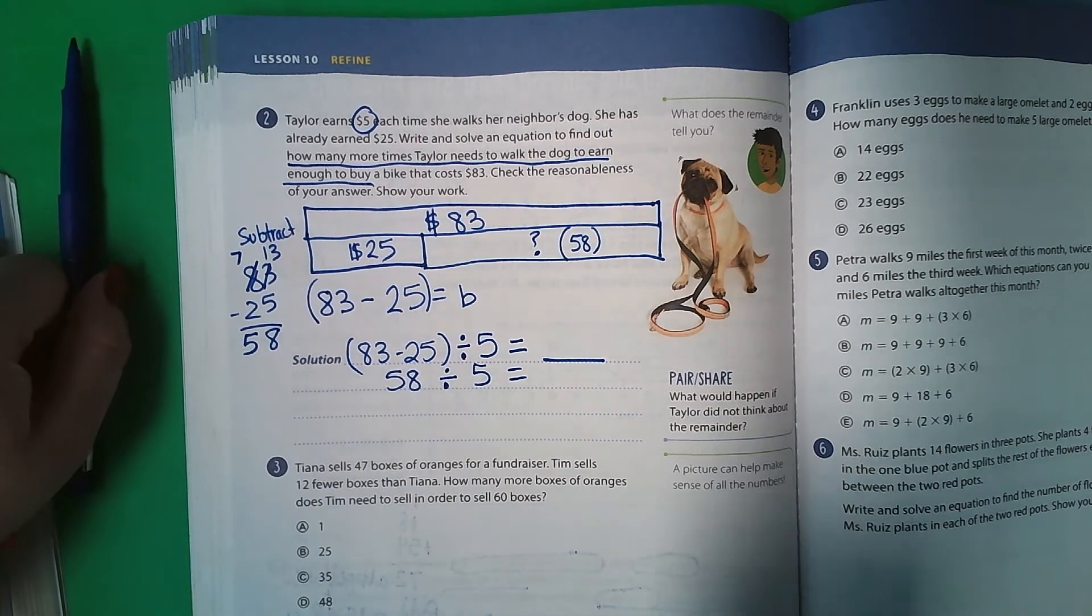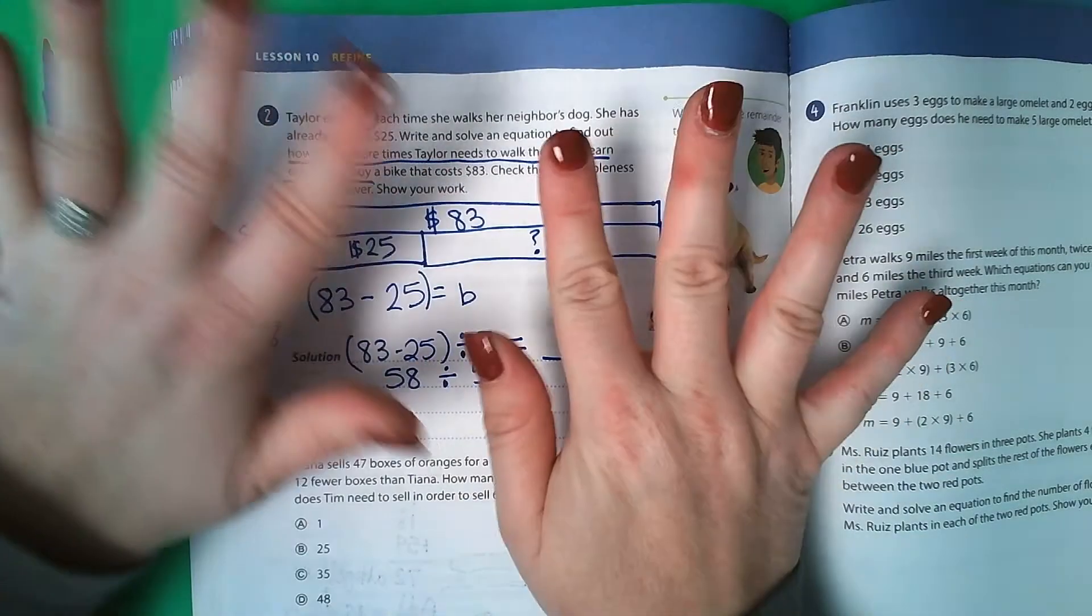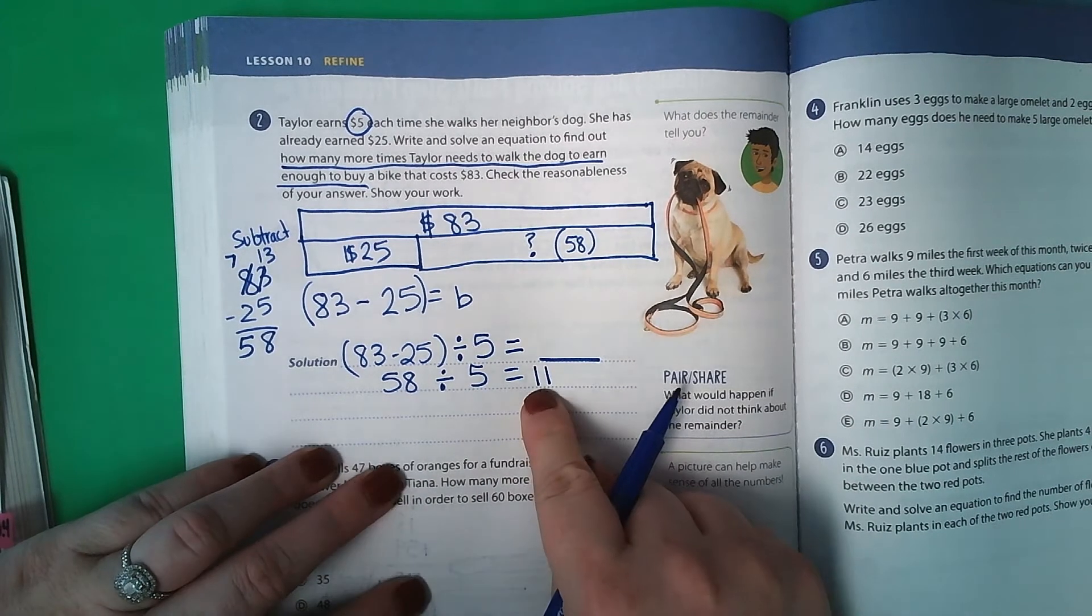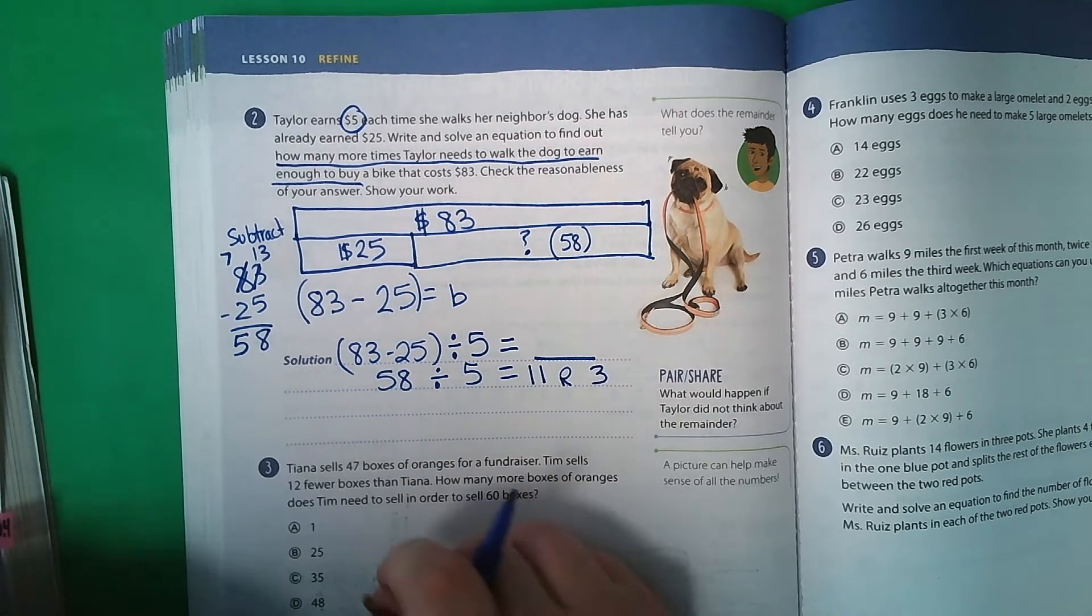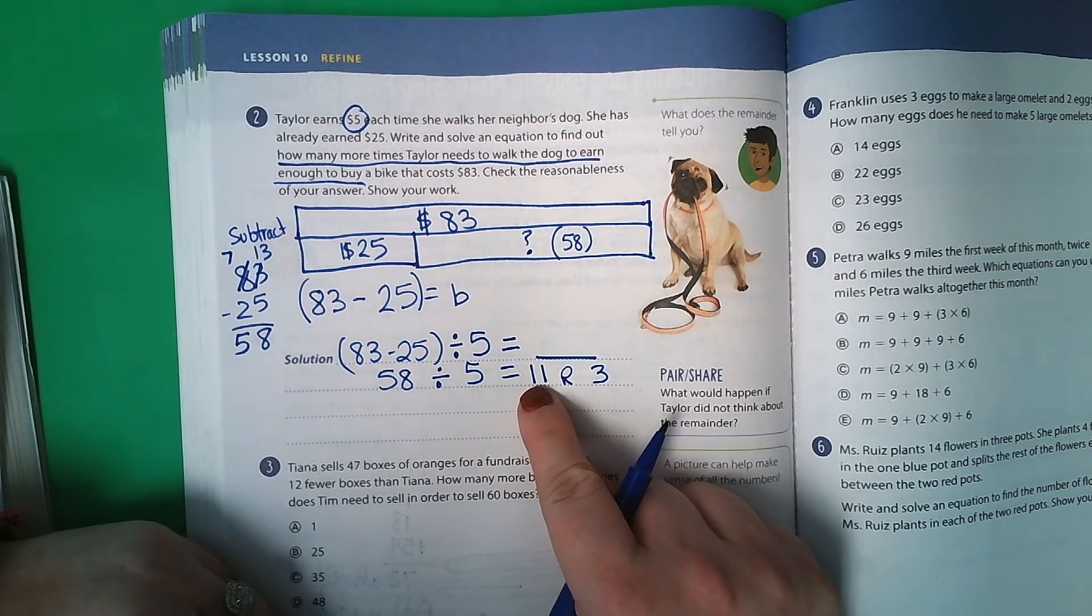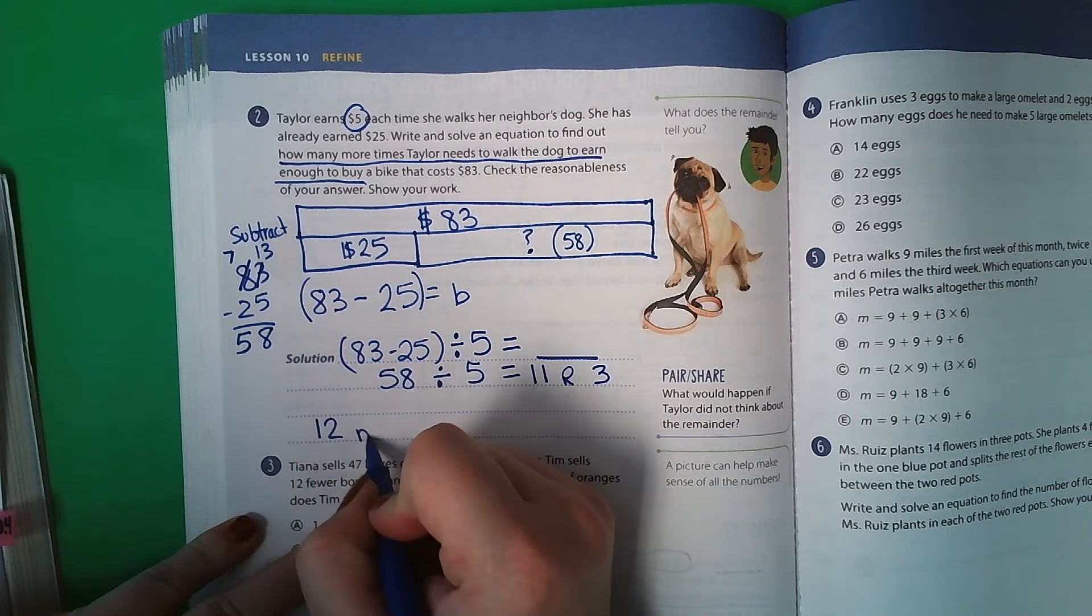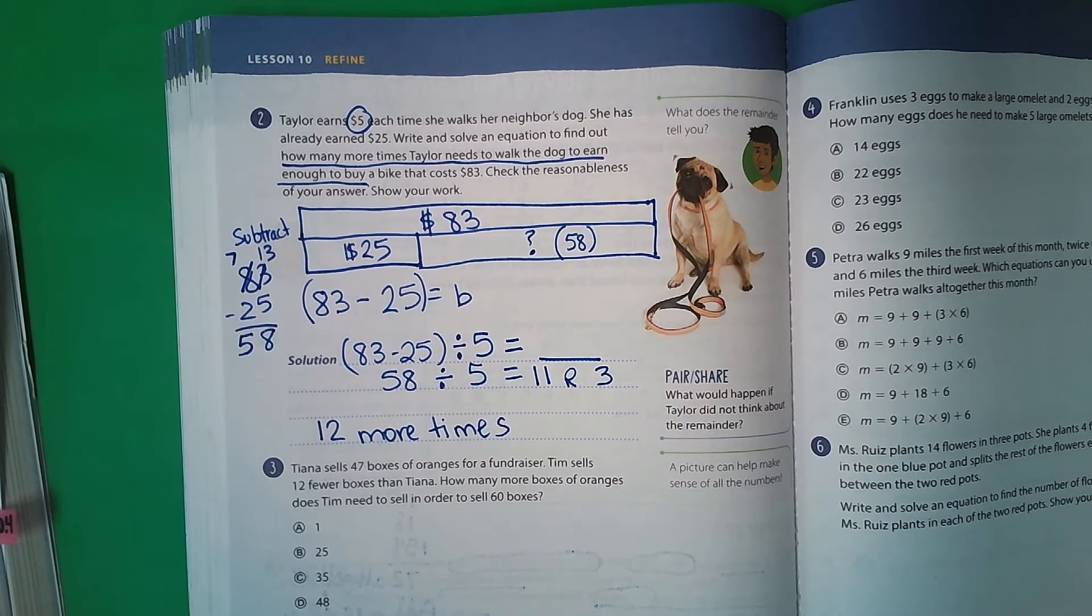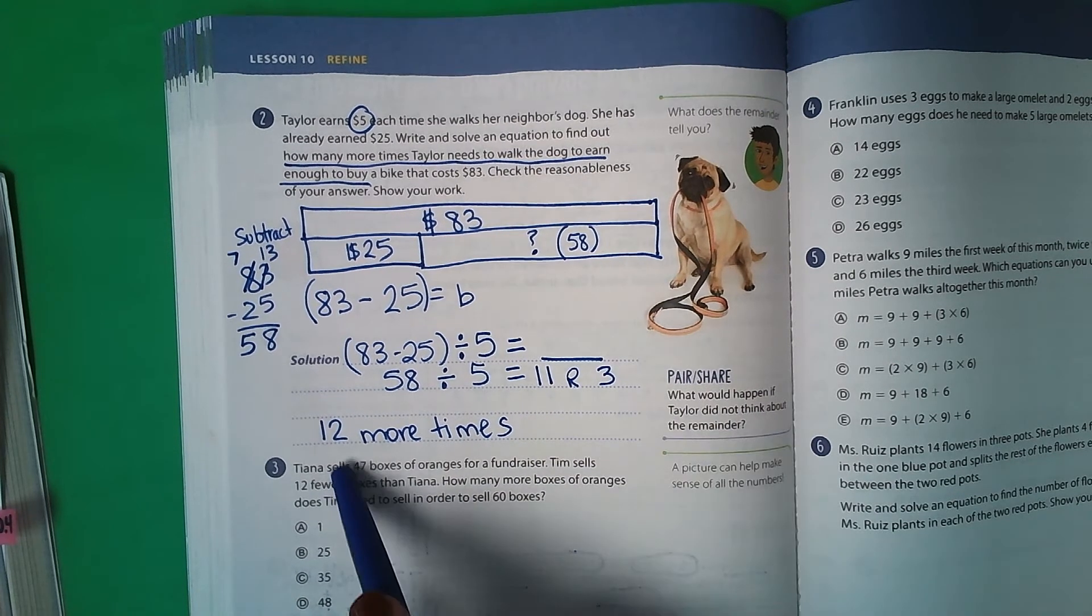If I skip count by 5s, 5, 10, 15, 20, 25, 30, 35, 40, 45, 50, 55. If I go to 60, that's too much. So that's 11. 11 times 5 is 55, so that means I'm going to have 3 left. So it's 11, remainder 3. Well, is she going to have enough money to walk, to buy the bicycle if she only walks it 11 times? No. She's going to be short just a little bit. So she's going to have to walk the dog 12 more times to have enough money to buy the bike. This is called interpreting the remainder. She won't have enough money to walk the dog, so she's going to have to walk it 12 times.